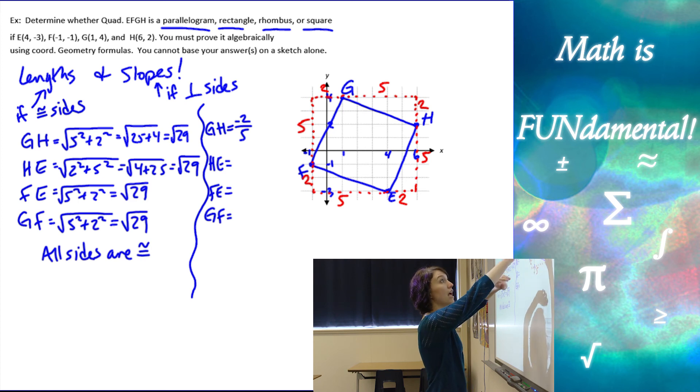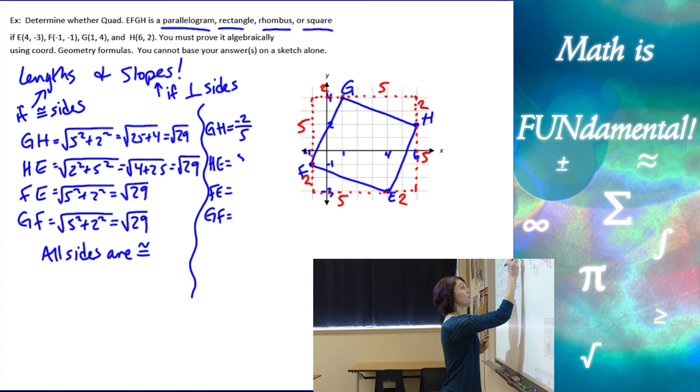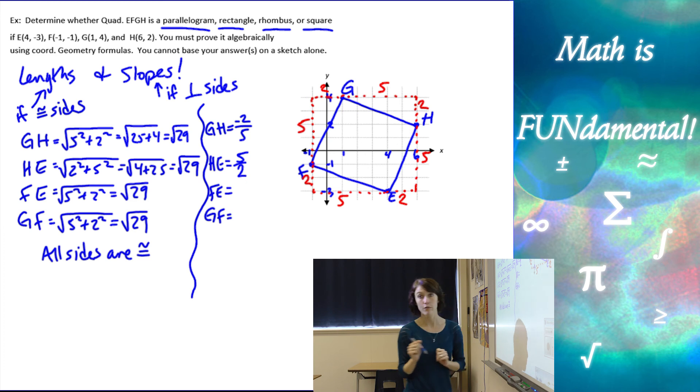So from E to H, I would go up five and then over two. So this is going to be up five over two. If you notice those two sides have opposite reciprocal slopes, which means they're perpendicular, which is really cool.